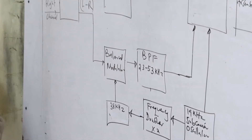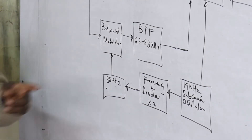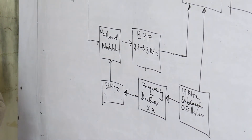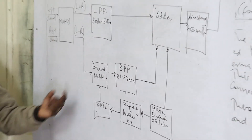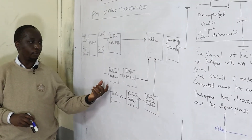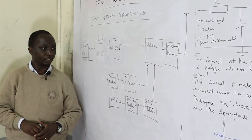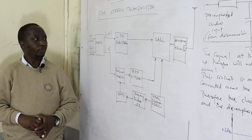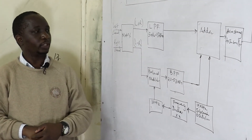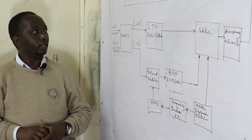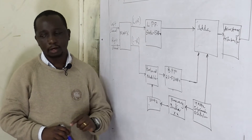To position the left and right channels, we need the 19 kilohertz sub-carrier as the center of frequency. The out-of-phase signal will be balanced modulated and passed through a band-pass filter, while the left minus right channel passes through a low-pass filter. The L plus R channel will be clearer than the L minus R channel.